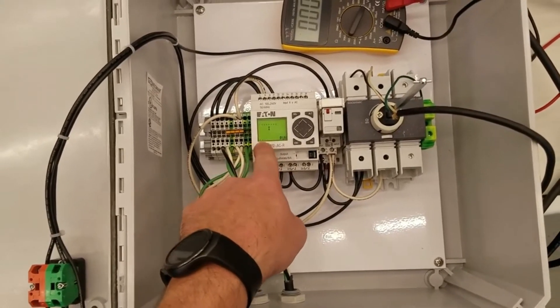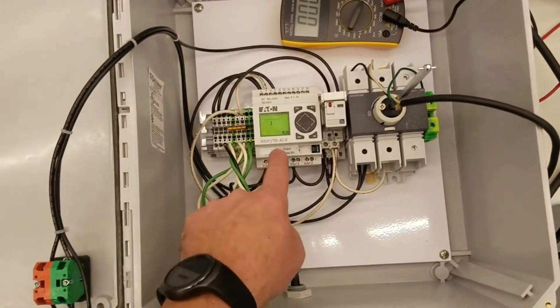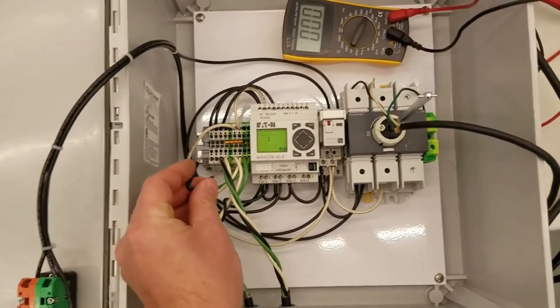And then you'll see output one down here is the first solenoid valve and output two is the second solenoid valve.